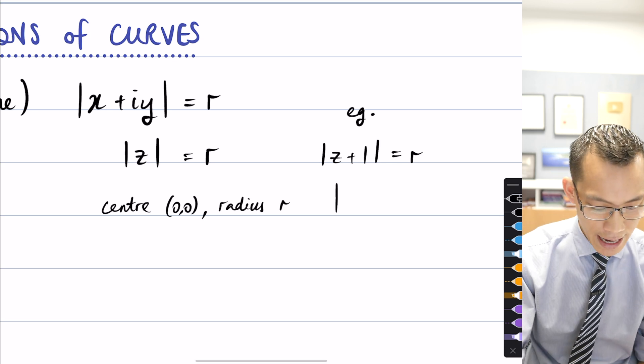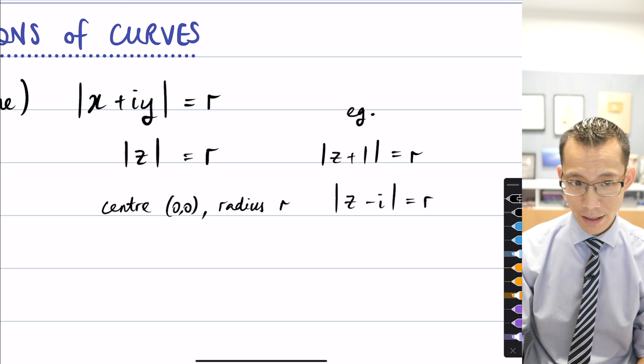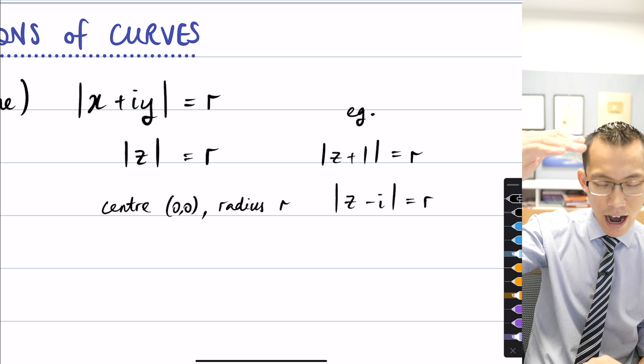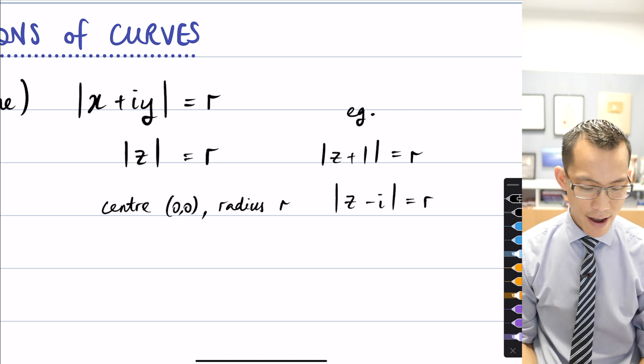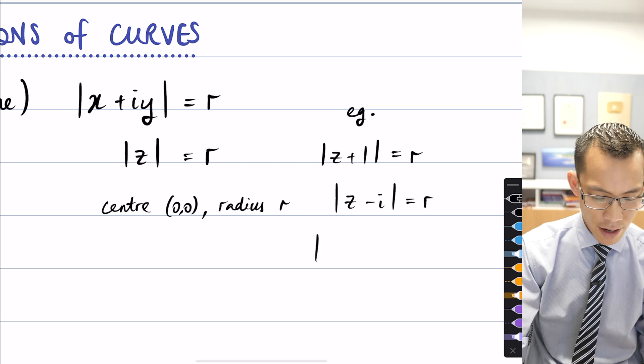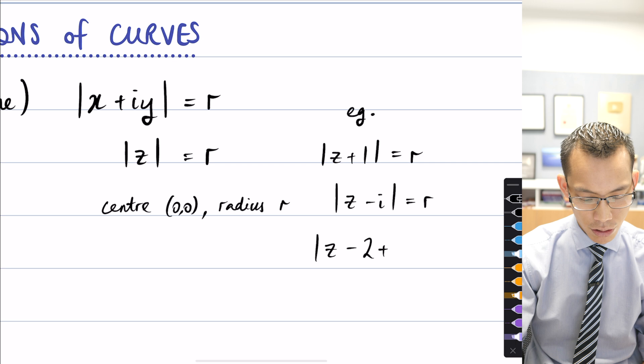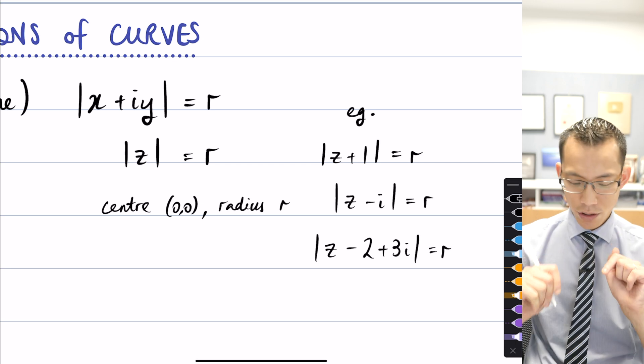And I could change that. I could say, hey, how about z minus i? Now I would be measuring from i up on the imaginary axis. And of course I can put any complex number that I like in there. You just have to be careful though, if I gave you something like z minus 2 plus 3i equals r, just be cautious.